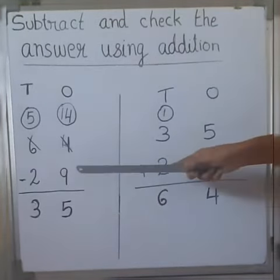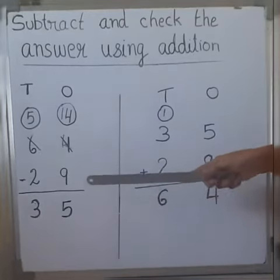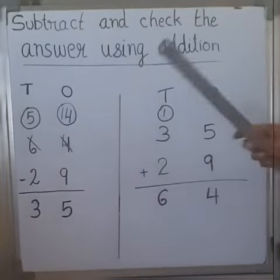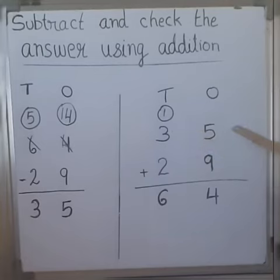Now we are going to add these 2 numbers to check whether the answer is right. 35 plus 29. 5 plus 9 is 14, so we write 4 here and 1 is carried over.